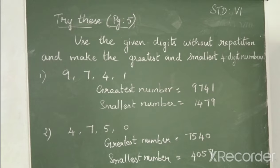So here 9, 7, 4 and 1 are given. Among the 4, 9 is the greatest, so the greatest number will start with 9. After 9, the next greatest is 7, then 4, and the last is 1. So the greatest number will be 9,741 and the smallest number will be 1,479.